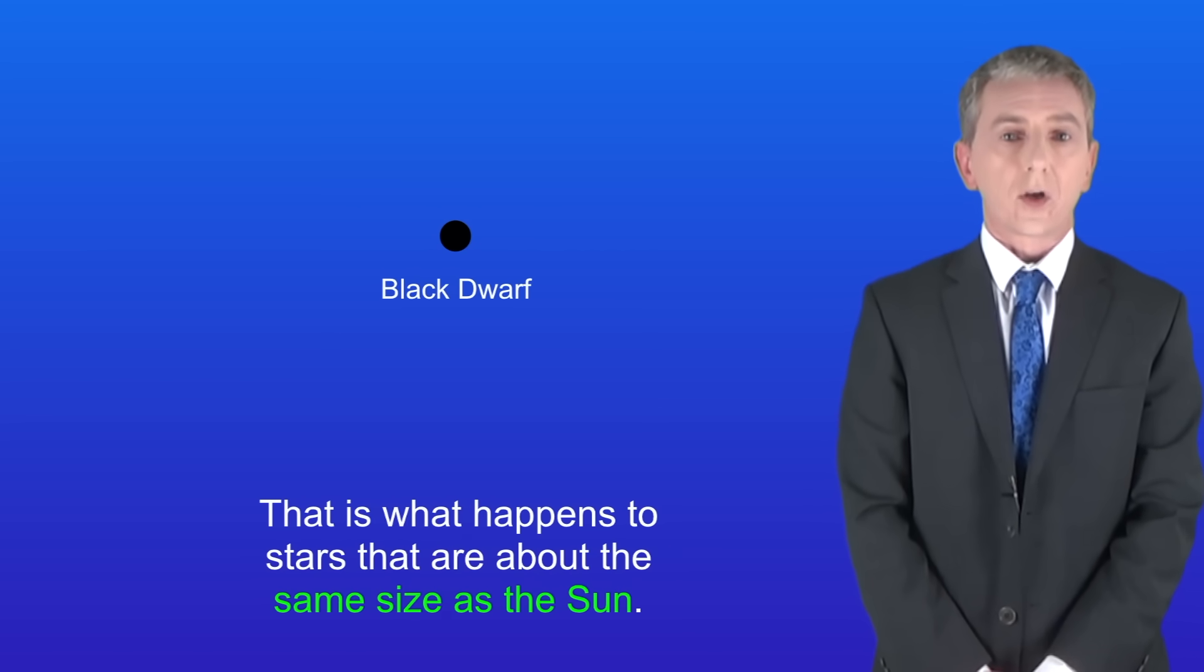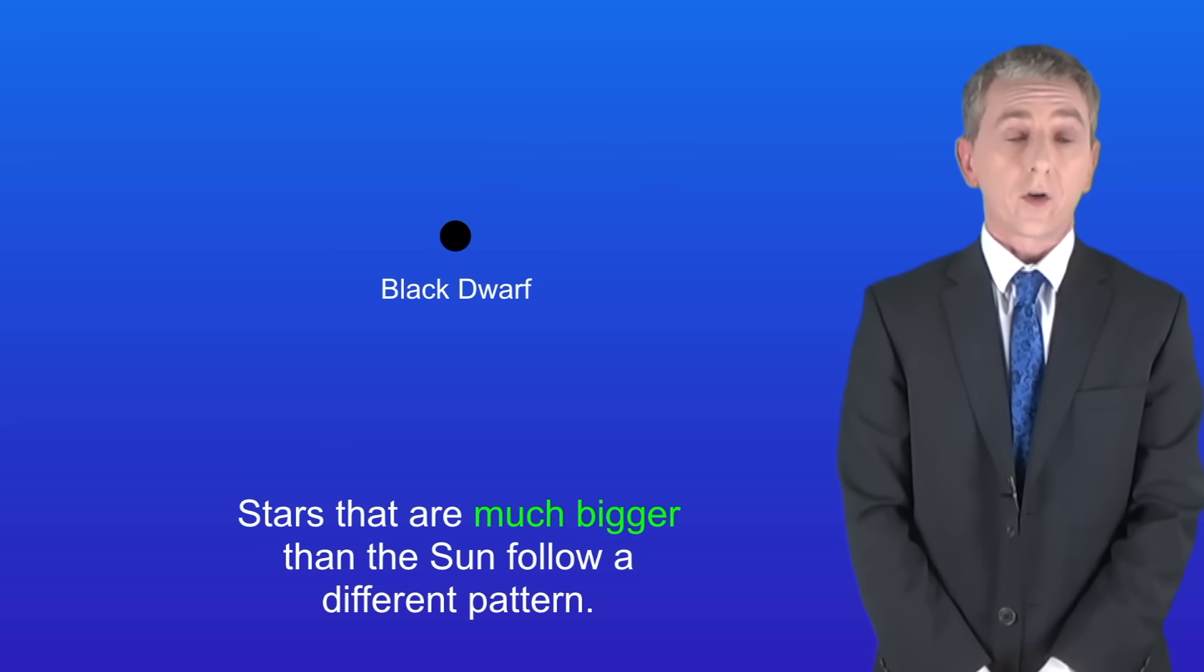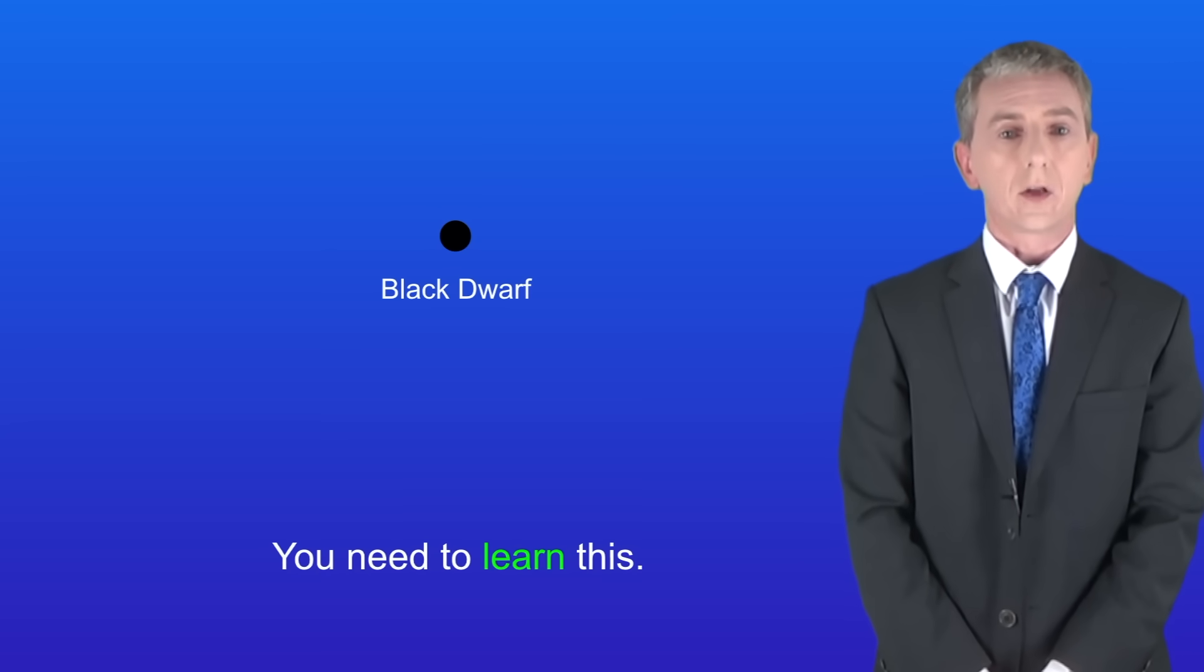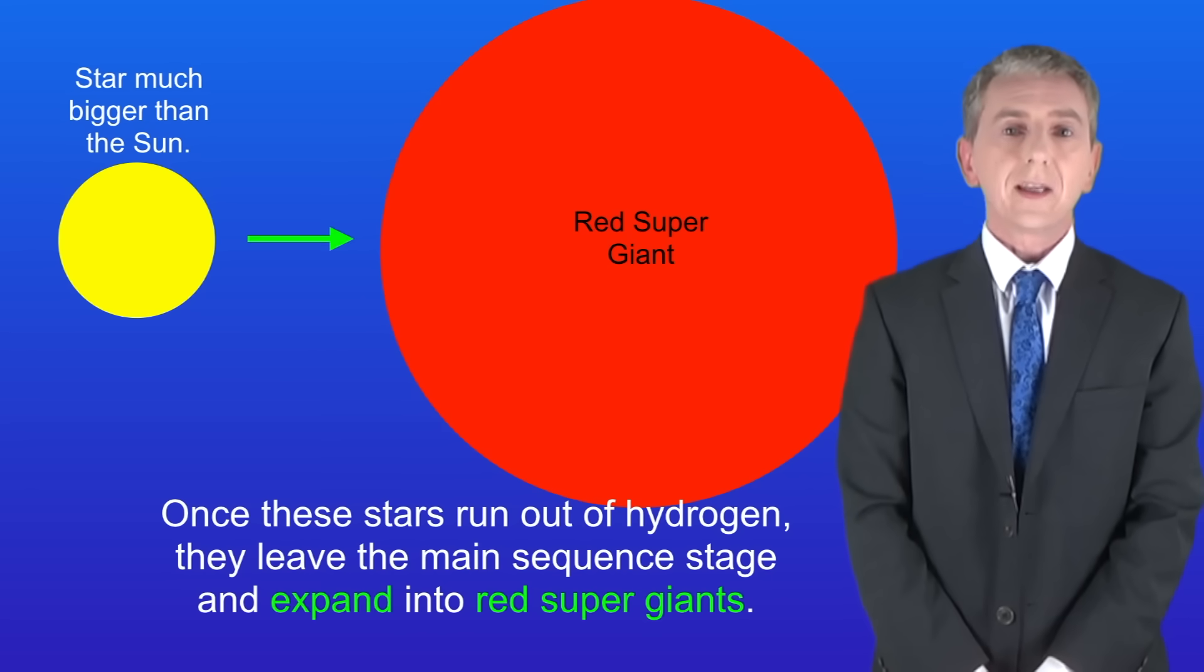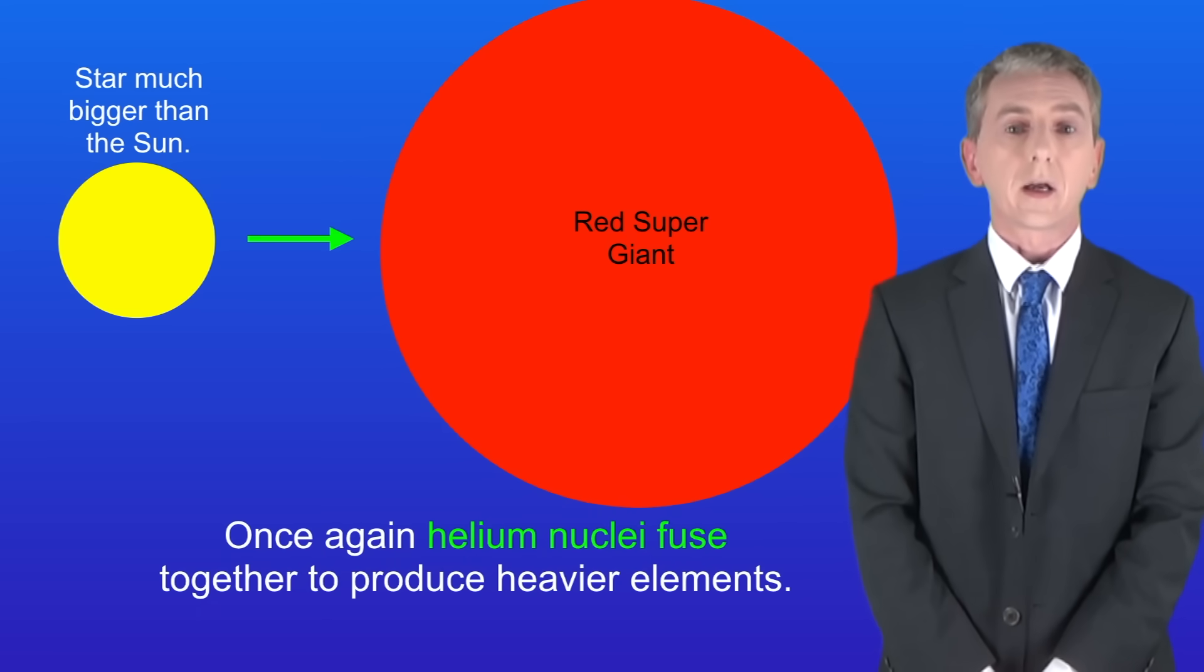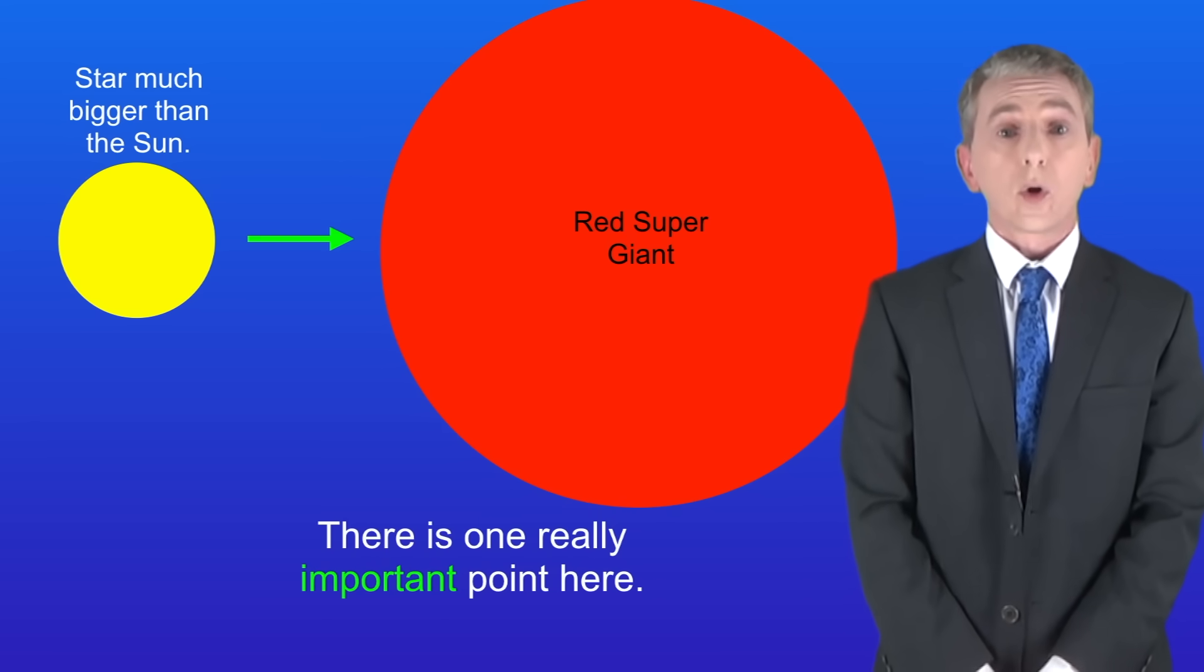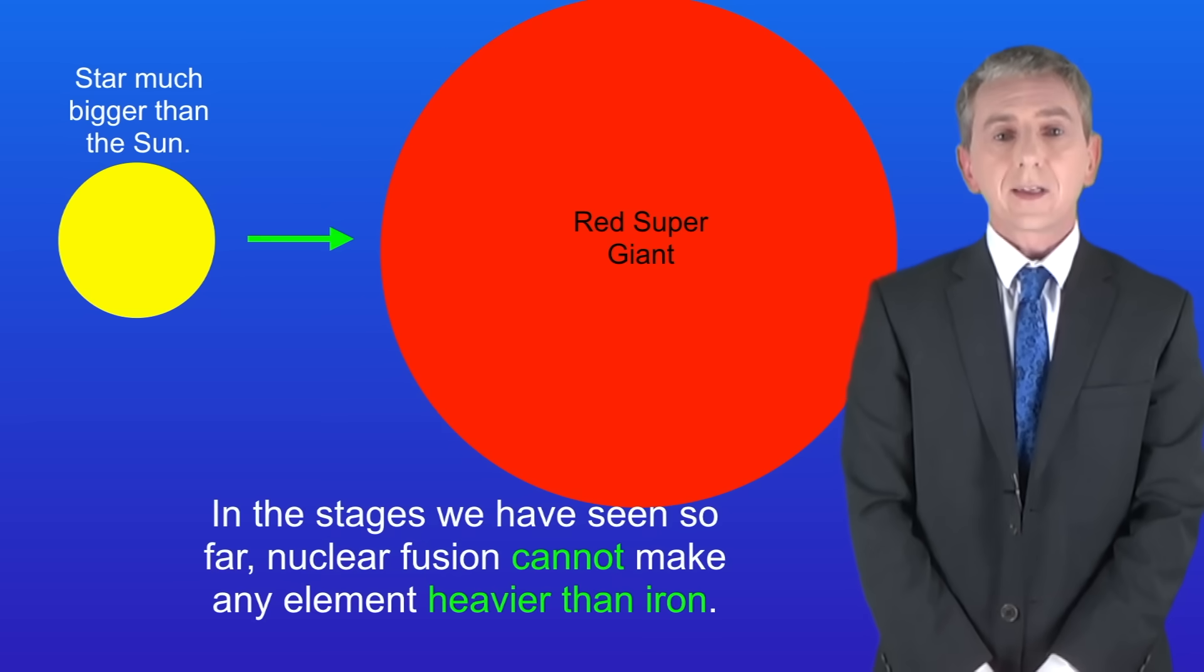That's what happens to stars about the same size as the Sun. Stars that are much bigger than the Sun follow a different pattern, and you need to learn this. Once these stars run out of hydrogen they leave the main sequence stage and expand into red supergiants. Helium nuclei fuse together to produce heavier elements. There is one really important point here: in the stages we've seen so far, nuclear fusion cannot make any element heavier than iron.